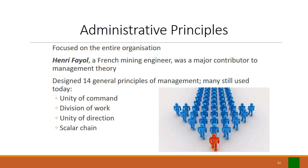The next principle was unity of direction — certain activities in an organization should be grouped together so that a manager can be an expert on managing those activities. We still see this today: organizations have a marketing department and a finance department where individuals with similar skill sets are grouped together. And lastly, the scalar chain — in structuring the organization, the chain of authority should extend from the top to the bottom of the organization and include every employee. We see this in organizational hierarchies, everywhere from the CEO to the street sweeper.